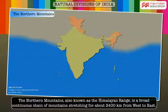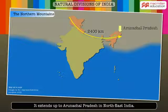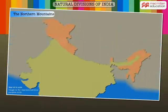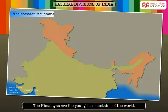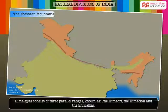The Northern Mountains, also known as the Himalayan Range, is a broad continuous chain of mountains stretching for about 2,400 km from west to east. It extends up to Arunachal Pradesh in northeast India. The Himalayas are the youngest mountains of the world and consist of three parallel ranges known as the Himadri, the Himachal, and the Shivaliks.